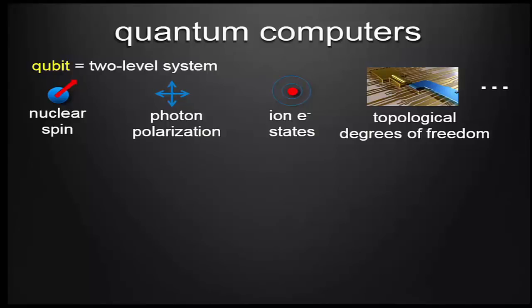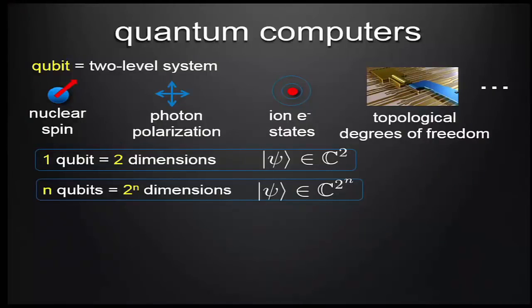Quantum computers are a form of computing that's different, but we can again abstract away from the hardware. Nuclear spin, photon polarization, the excited states of an ion — all of these can be made into qubits. And the promise comes from the fact that n qubits are represented by a 2^n dimensional vector, which is the fundamental exponential difference between what a quantum state can do and what a classical computer can do.